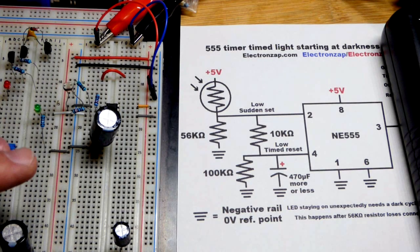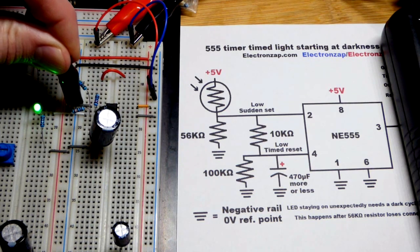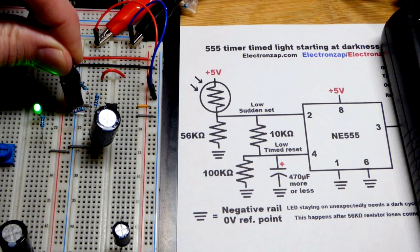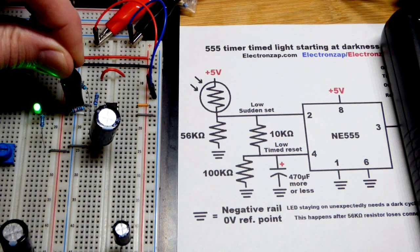So now in this video, we're going to look at this circuit. So right now the LED is off. When I cover the light dependent resistor, the LED turns on and it's going to stay on for a while because this is a 1000 microfarad capacitor.